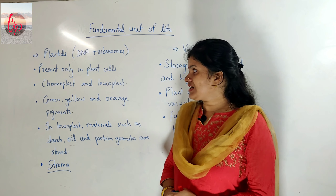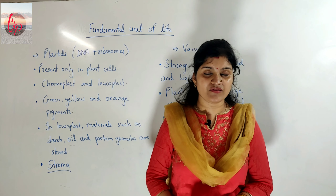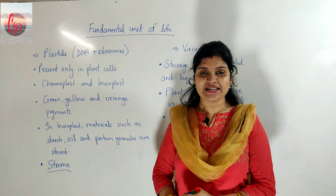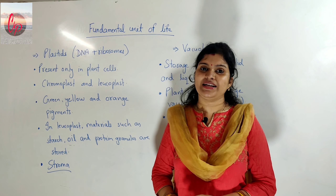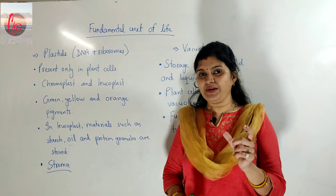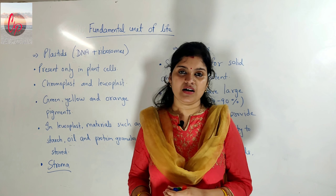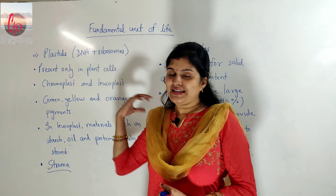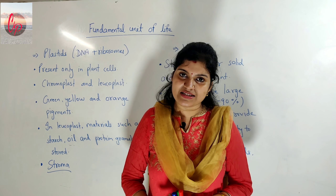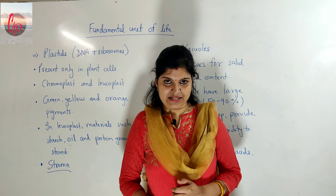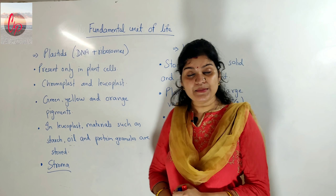Let's start with the cell organelle plastid. The very first point is that plastids are only present in plant cells — they are not found in animal cells. This is a very characteristic feature of plastids: present only in plant cells, absent in animal cells.